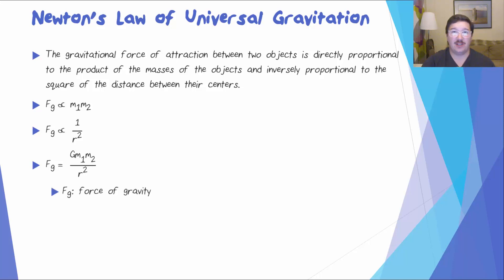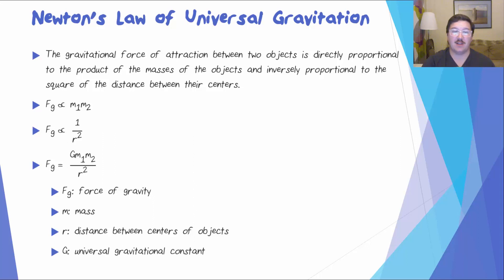Fg stands for the force of gravity, M stands for mass, R is the distance between the centers of the objects, and G is the universal gravitational constant. You can find this value on your reference table — it's 6.67 times 10 to the negative 11 Newton meters squared per kilogram squared.